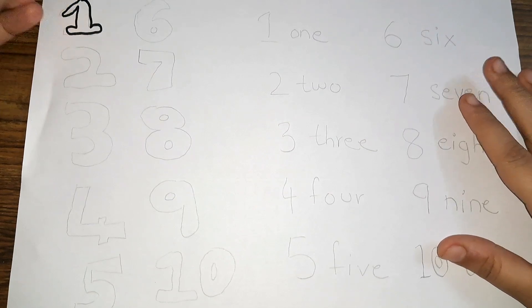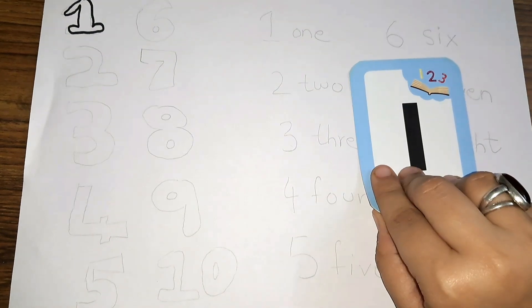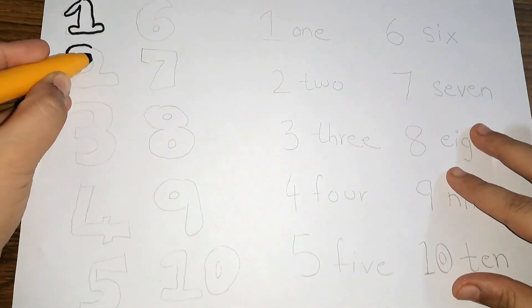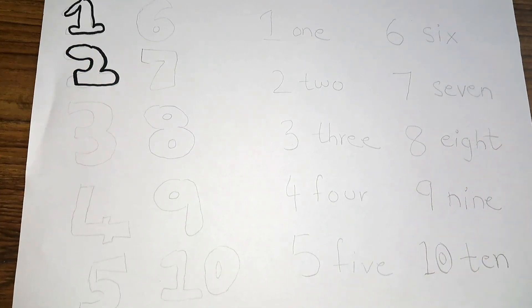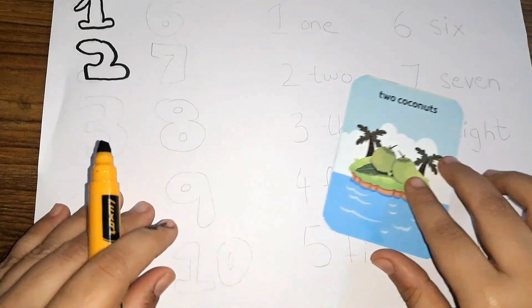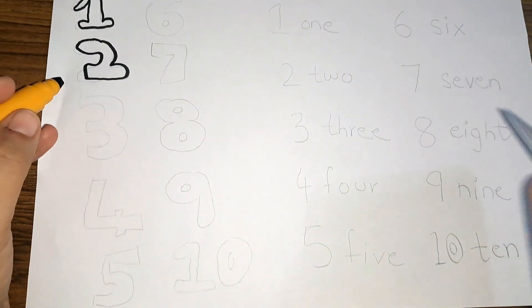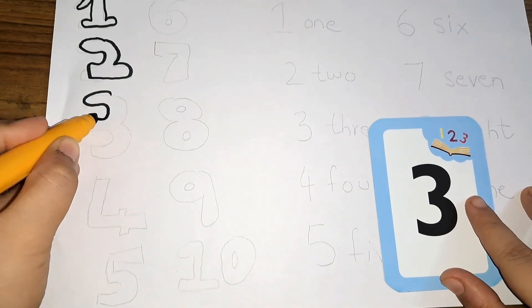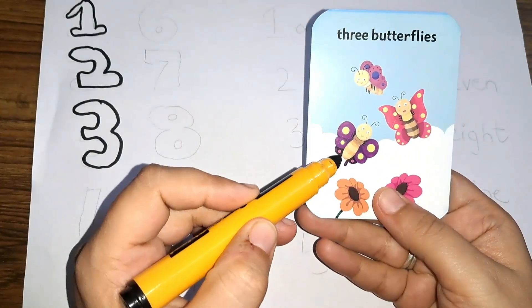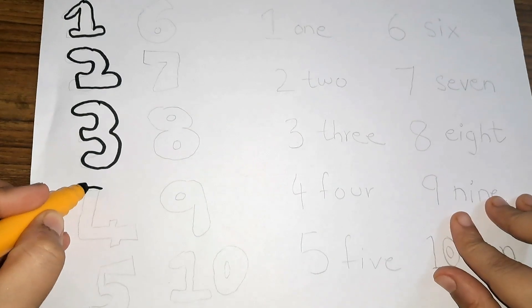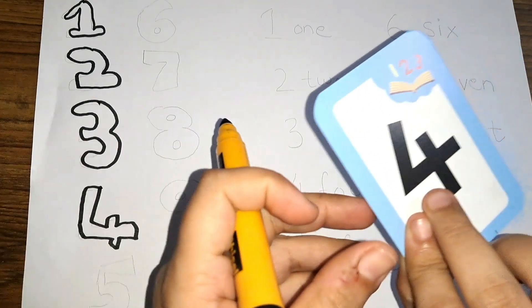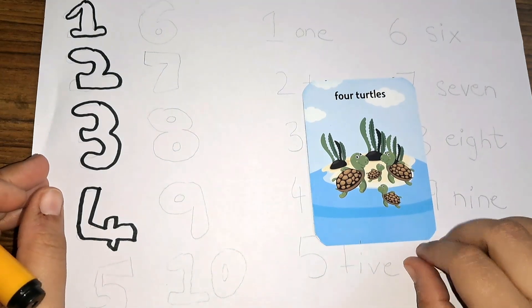Number 1 — one. Number 2: 2 coconuts — 1, 2. Then we have number 3. Number 3 — 3 butterflies: 1, 2, and 3. 3 butterflies.